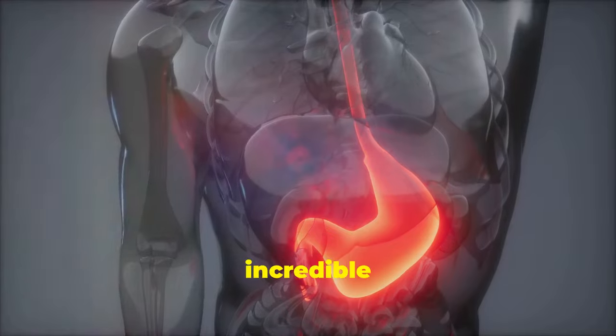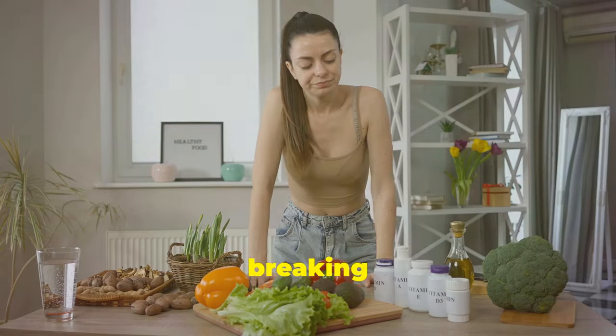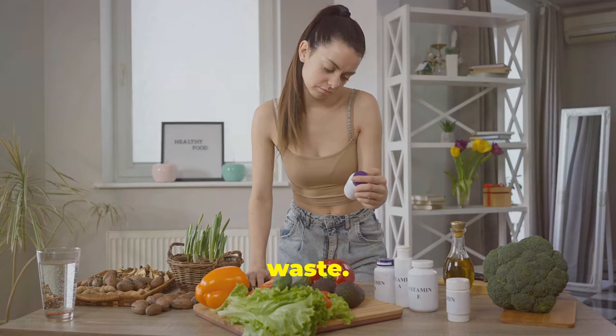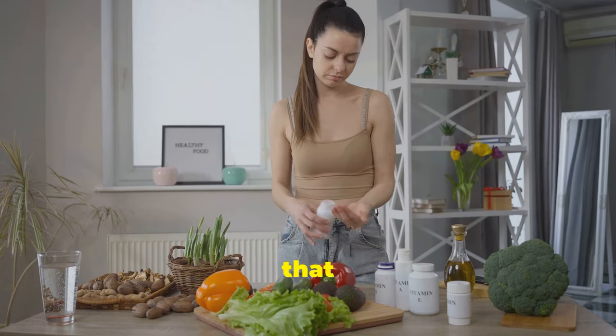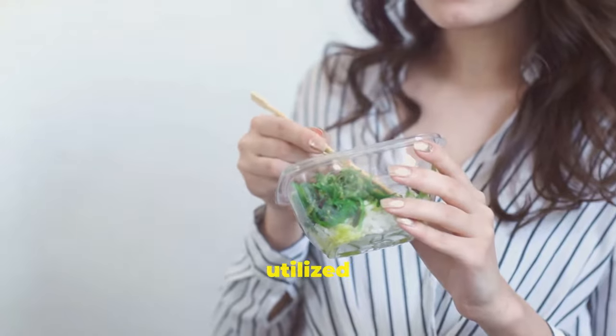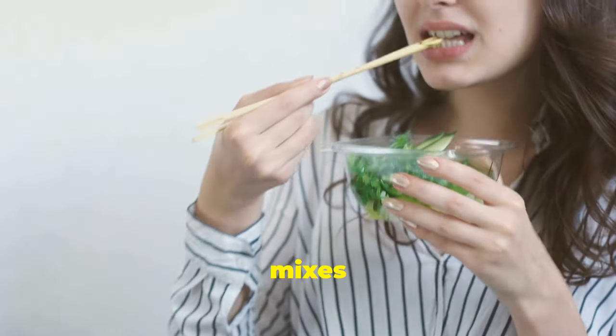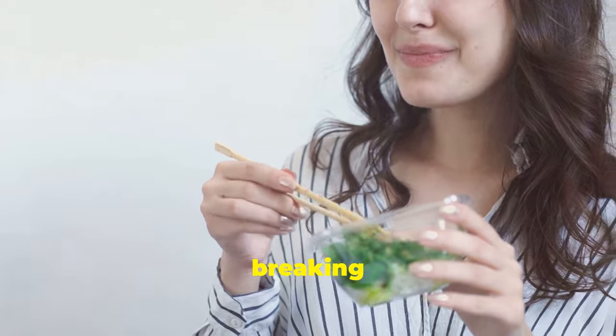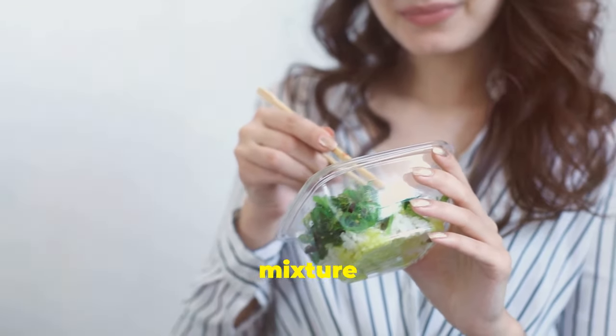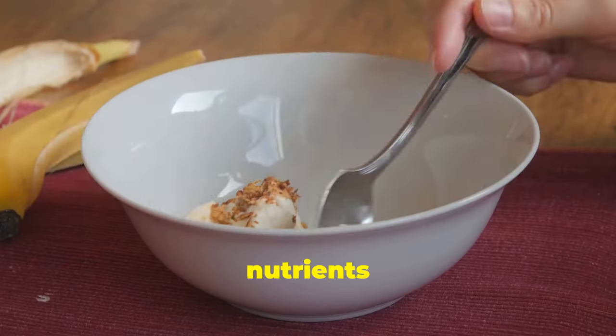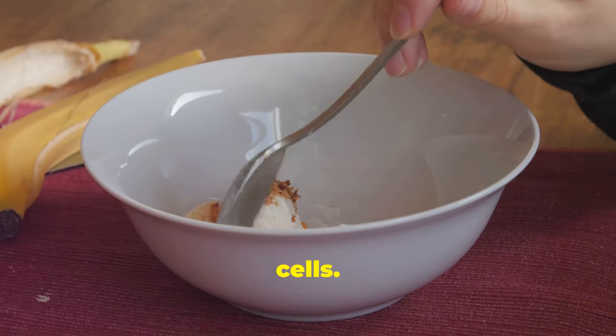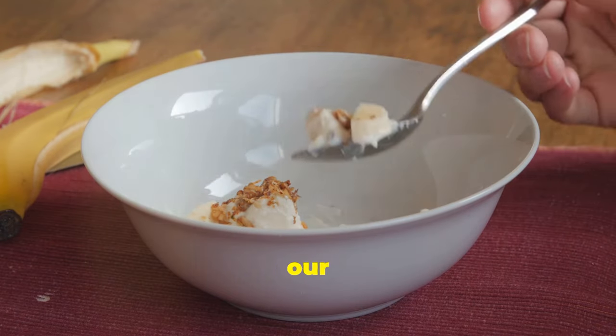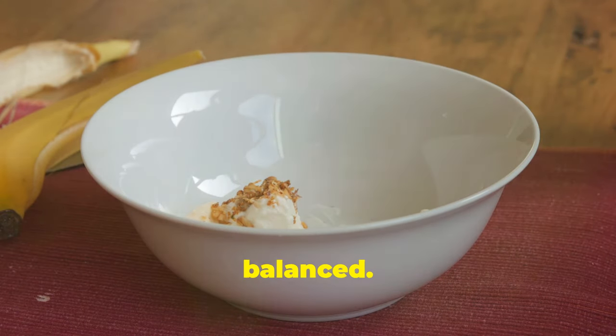The human gut is an incredible organ. It's responsible for breaking down food, absorbing nutrients and eliminating waste. When we consume a meal, our digestive system works tirelessly to ensure that every bit of nutrition is extracted and utilized by our body. The stomach churns and mixes food with digestive juices, breaking it down into a semi-liquid form. This mixture then travels through the intestines, where nutrients are absorbed into the bloodstream, providing energy and building blocks for our cells. Finally, the waste products are efficiently eliminated from our body, keeping our system clean and balanced. But its role extends far beyond these basic functions.